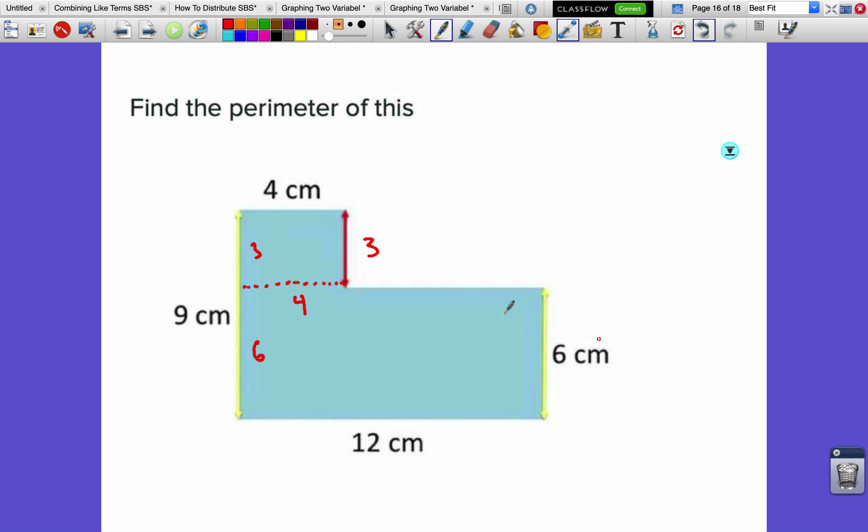This is 4. To make 12, we need this to be 8 because 4 and 8 make 12. So we figured out that this is 3 and 8. Now we can add up all the way around: 9 + 4 + 3 + 8 + 6 + 6 + 12. Pair them off or just plug this whole thing into your calculator - I'm okay with that.